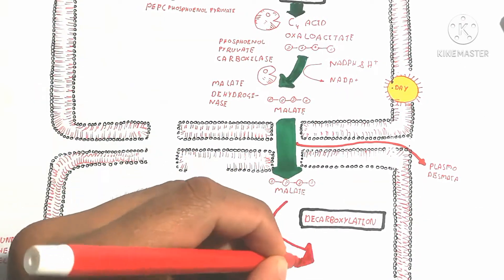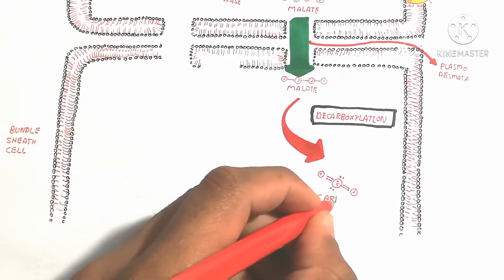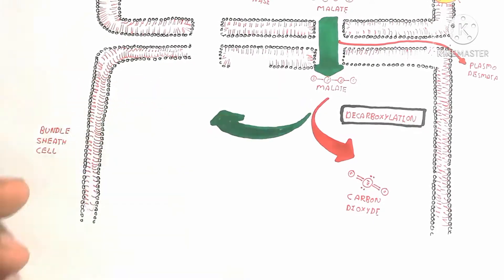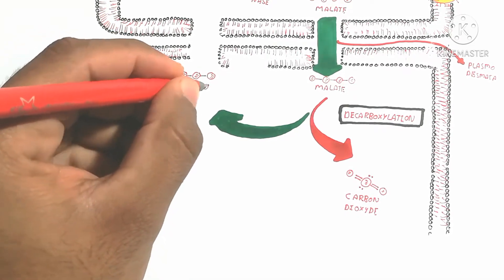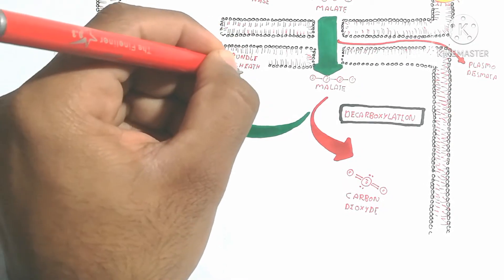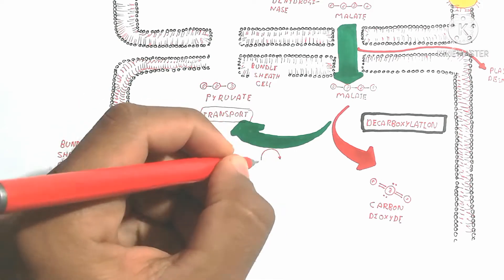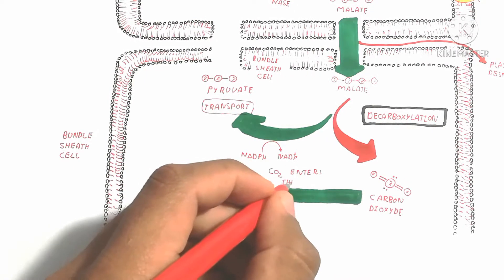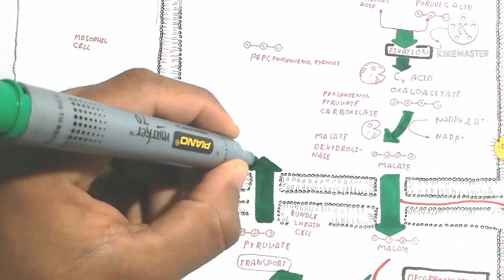The plasmodesmata, which are pit-like structures between cells, are used to transport malate into the bundle sheath cell. There, decarboxylation occurs — carbon dioxide is released and the malate is converted into pyruvic acid, a three-carbon molecule. The mesophyll cell transports malate into the bundle sheath cell for decarboxylation because in hot weather the stomata remain closed.